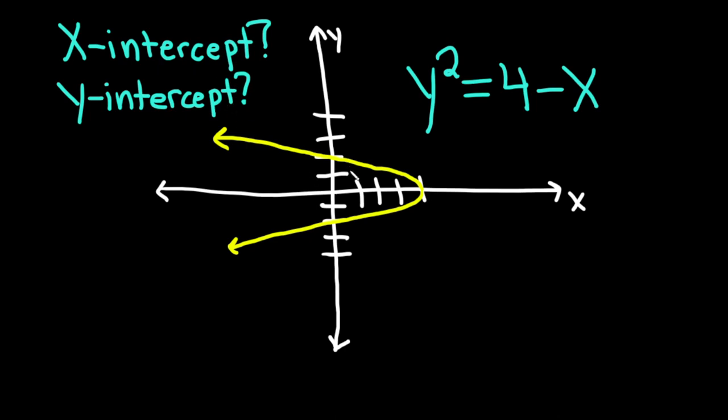So the x-intercept is where the graph, which you see here in yellow, intercepts the x-axis, which is the horizontal axis here. In other words, it's going to touch it or cross it. So right here, this red dot, that's where this occurs.